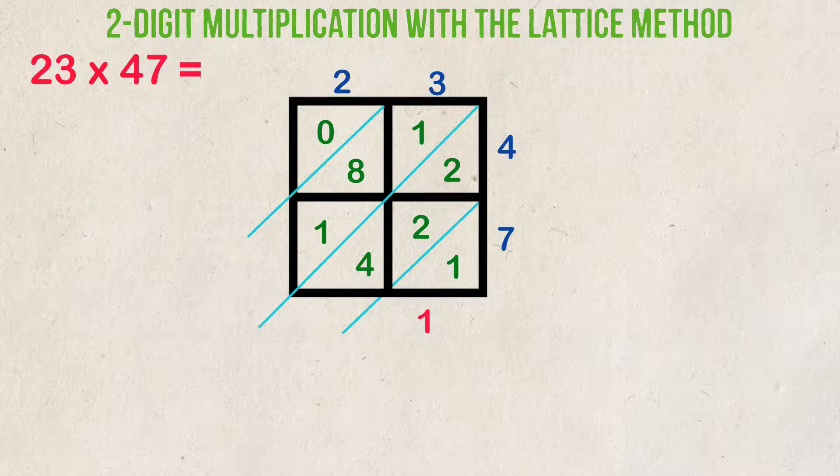The next set of diagonals is 4 plus 2 plus 2, which equals 8. The next row of diagonals, 1 plus 8 plus 1, which is equal to 10. So for this one, we put the 0 down and carry the 1 into the next diagonal row.